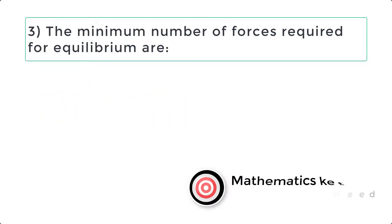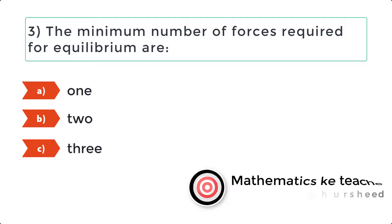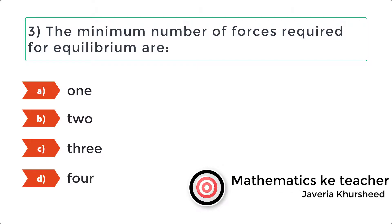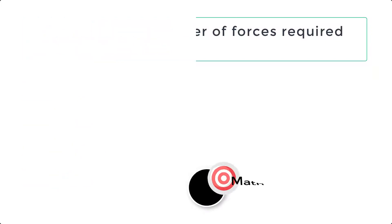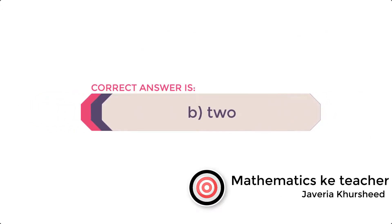Question 3: The minimum number of forces required for equilibrium are: A. One, B. Two, C. Three, D. Four. Correct answer is B: 2.